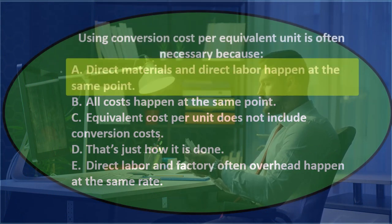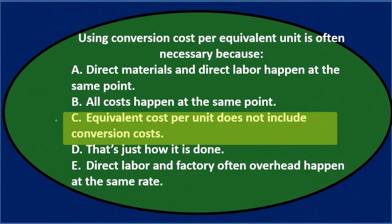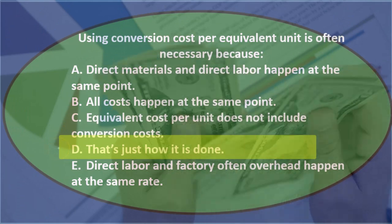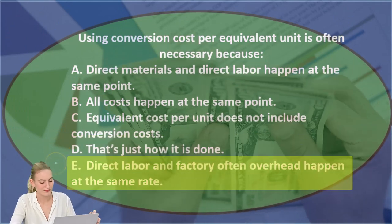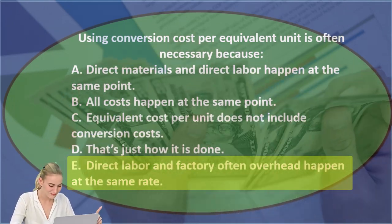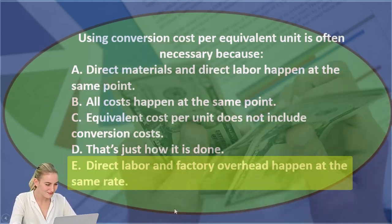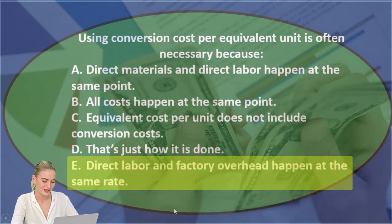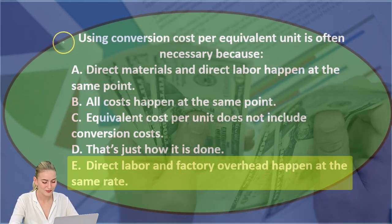Next question: using conversion cost per equivalent unit is often necessary because — A: direct materials and direct labor happen at the same point, B: all costs happen at the same point, C: equivalent cost per unit does not include conversion costs, D: that's just how it's done, E: direct labor and factory overhead happen at the same rate.